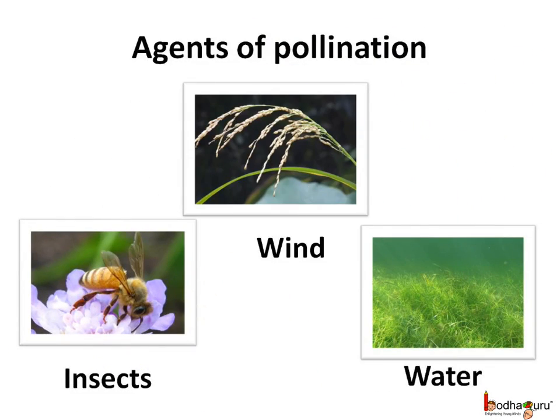As we saw, pollination happens due to external agents such as a bee, which is an insect. Other than insects, wind and water also help in pollination. Hence all of these are called the agents of pollination.